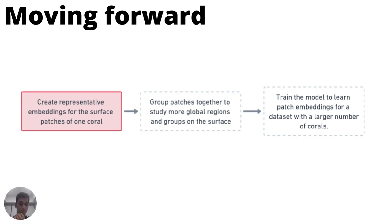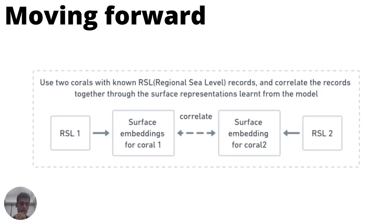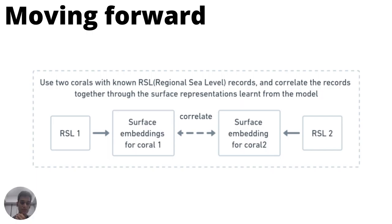Being in the field of machine learning, the model could obviously benefit from a larger amount of data samples, which we plan to address in the future. Additionally, once we have a good characterization of the coral surface through these embeddings, each coral has an associated regional sea level record which it tracks. We will know this information from corals that are already slabbed and for which we have surface lidar scans. The main aim is to compare regional sea level history records of two corals through the surface embeddings, and thus find a relation between the regional sea level record and the surface features of the coral.